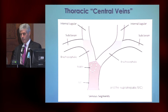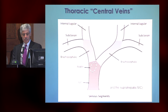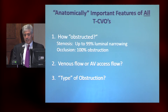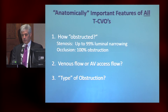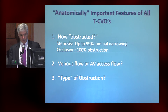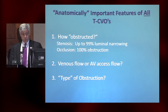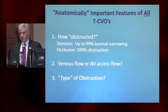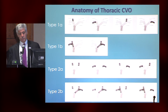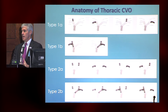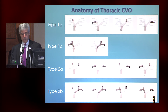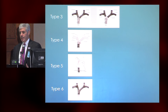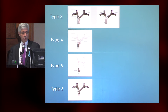We've come up with a series of diagrams showing the segments we're looking at. What anatomic features are important to describe for all thoracic central vein obstructions? First, how obstructed — stenosis up to 99% or complete obstruction, 100%, which is an occlusion. It's also important to report whether there is venous flow or arteriovenous flow. And finally, the type of obstruction. We're developing a TASC-type obstruction mapping, so you can categorize as type 1a, 1b, 2a, 2b, and so on. We're not sure if this matters, but until we create a structure upon which future research can be done, we'll never know.